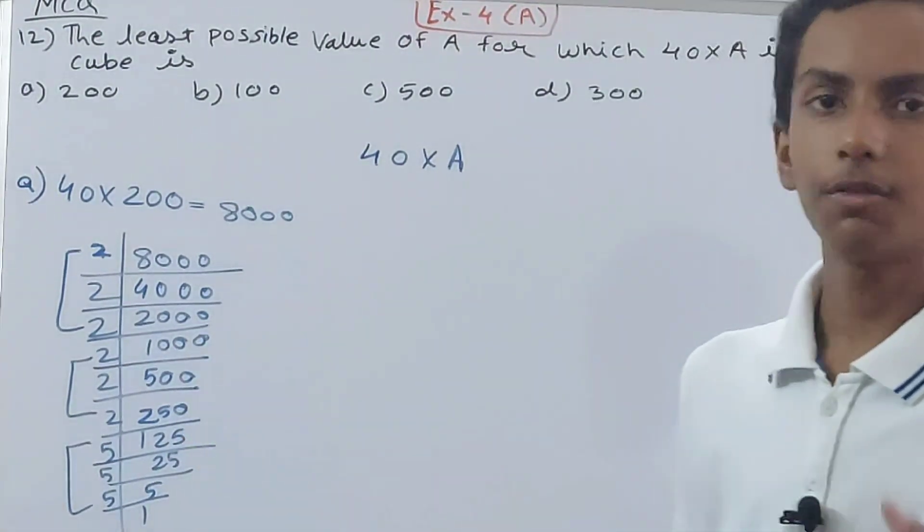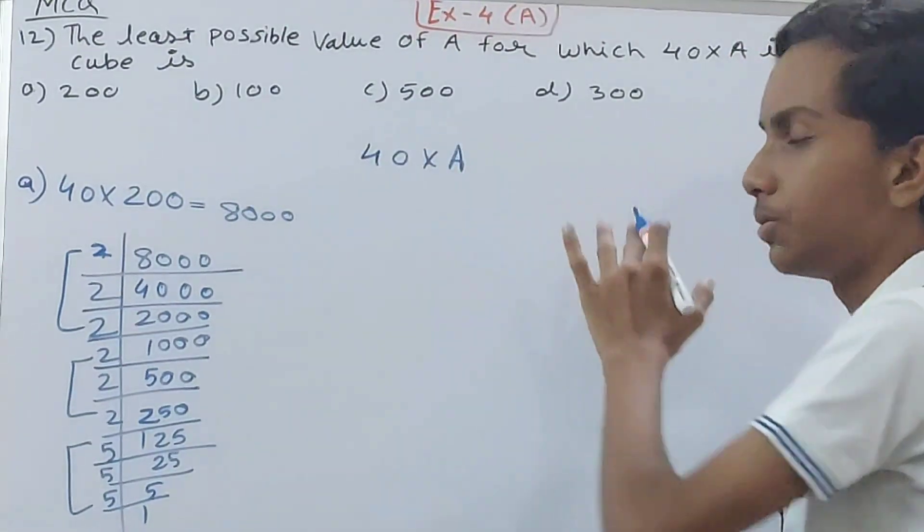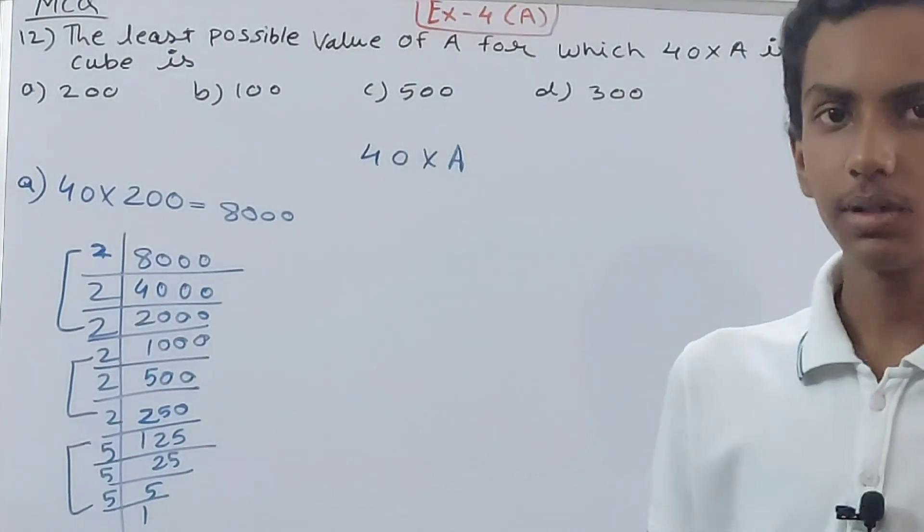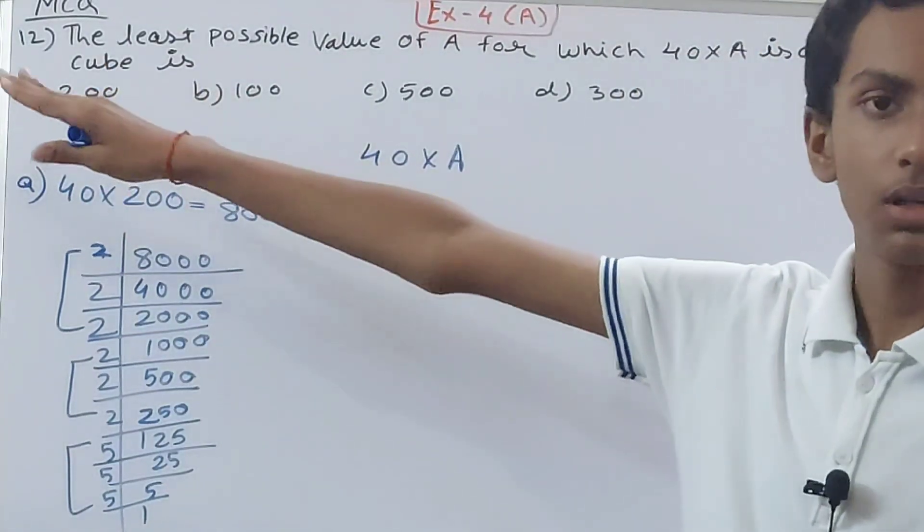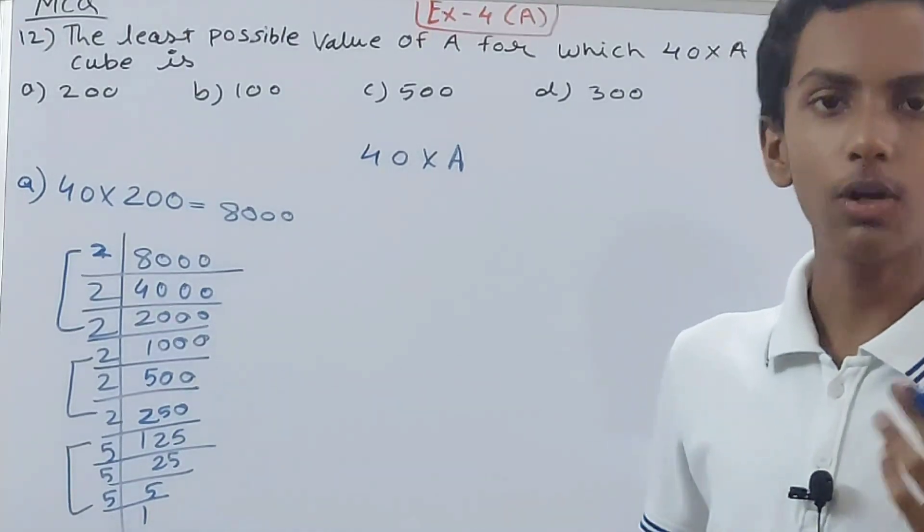Now you can see, all other three values we don't know if they will give us a perfect cube or not. But we know 200 will give us perfect cube. So if any number greater than 200 gives us perfect cube then also it is wrong because we want the smallest number.